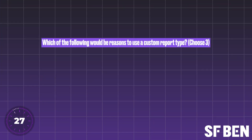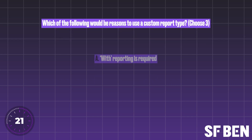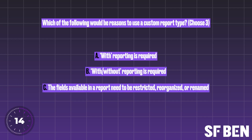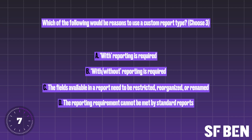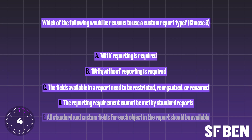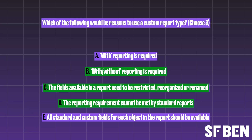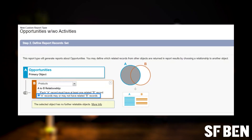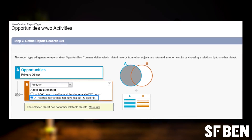Question eight. Which of the following would be reasons to use a custom report type? Choose three. A: With reporting is required. B: With/without reporting is required. C: The fields available in a report need to be restricted, reorganized or renamed. D: The reporting requirement cannot be met by standard reports. E: All standard and custom fields for each object in the report should be available. B, C and D are the right answers. We should use custom report types when standard reporting cannot meet our requirements. Good examples include the need to restrict, reorganize or rename fields and create with/without reports, for example, opportunities with or without products.